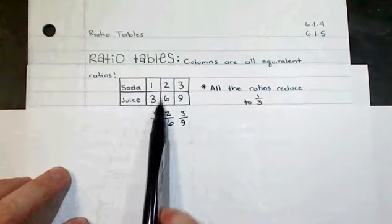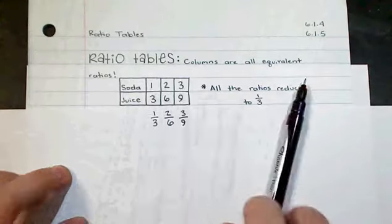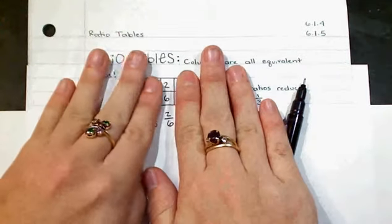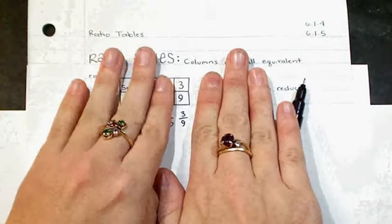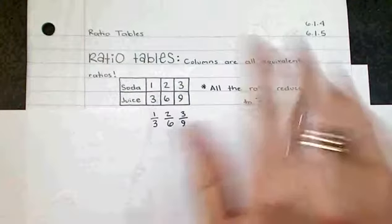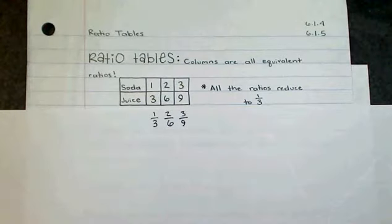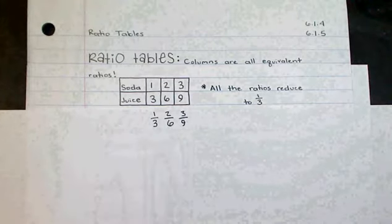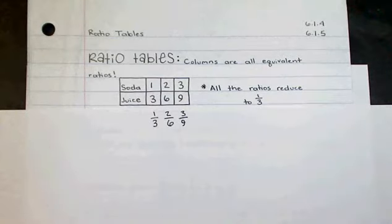So even though you see it in a table form, these really are just the fraction one-third, the fraction two-sixths, and the fraction three-ninths. So what is the purpose? The purpose is that this makes it really easy to solve a variety of word problems, especially word problems where it's crucial that you keep units organized.